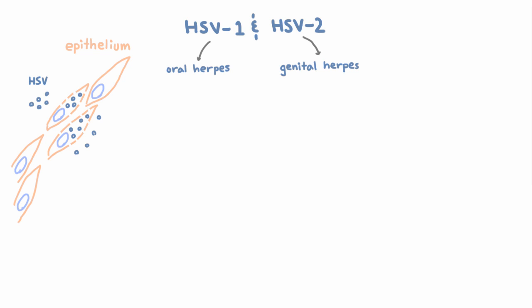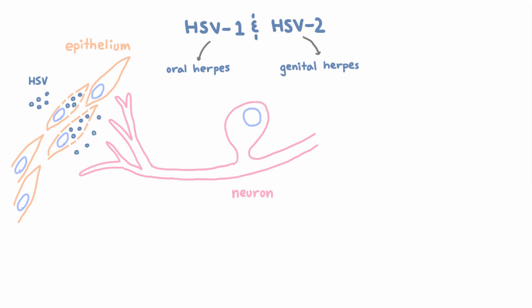But it doesn't stop there, because this is a neurotropic virus, meaning it likes neurons. It's actually going to be taken up by sensory neurons and undergoes retrograde transport back to the sensory ganglia — that's the cell body — and that's where latent infection is established. So when the epithelial infection is stopped by the immune system, HSV is still hiding out in the sensory ganglia.